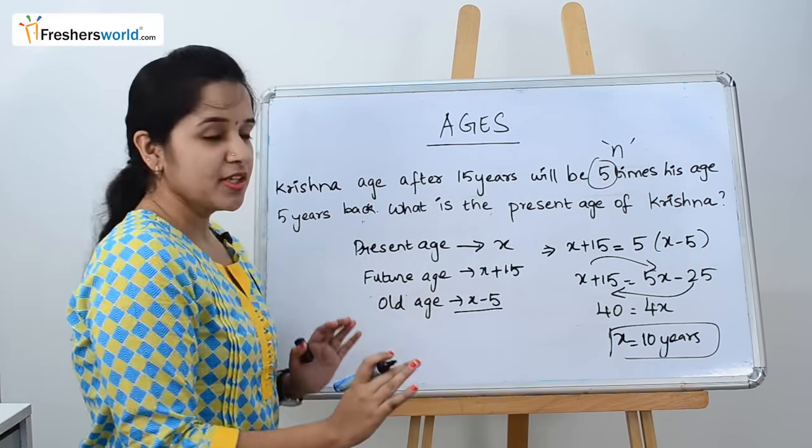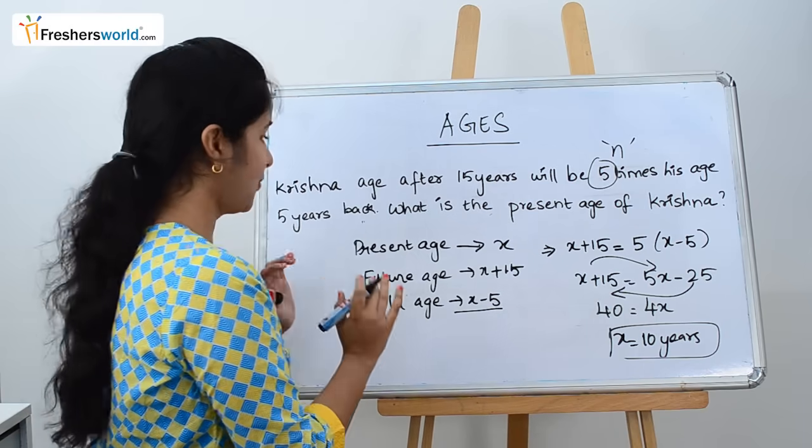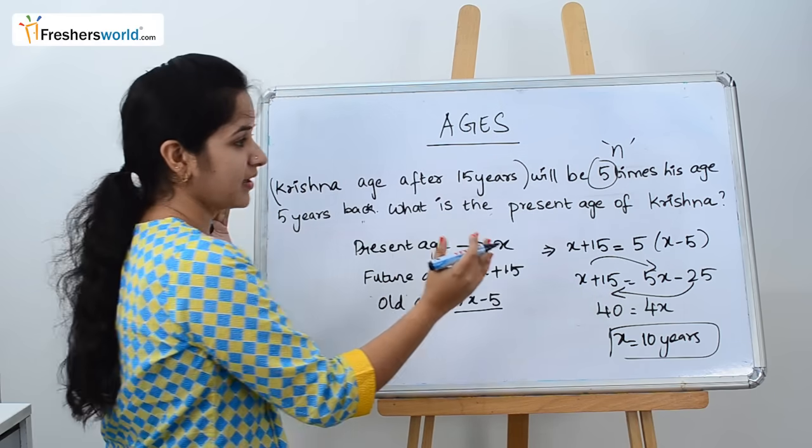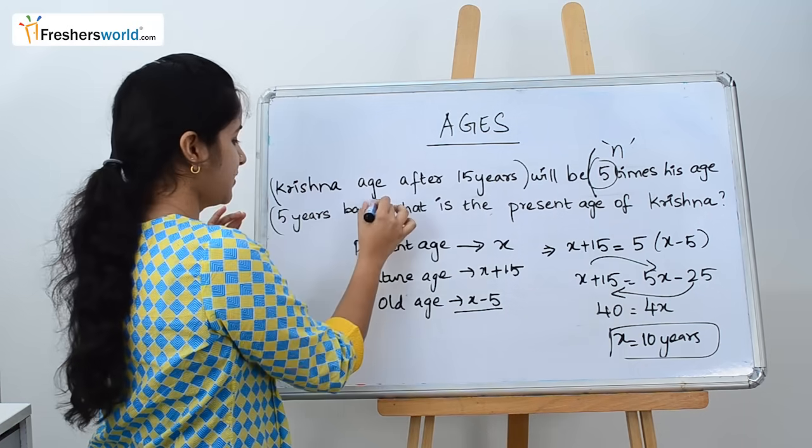In this example, once you segregate the question into three parts, you will be able to answer the question. Take Krishna's age after 15 years as a separate phrase, and will be 5 times his age 5 years back.